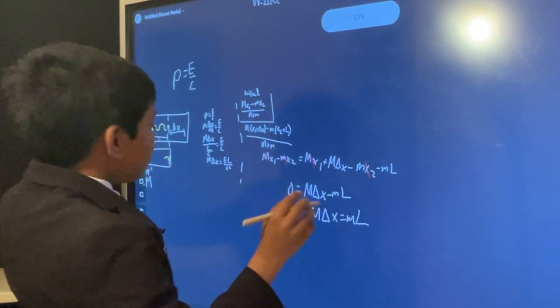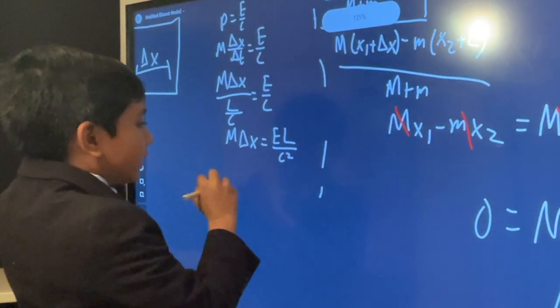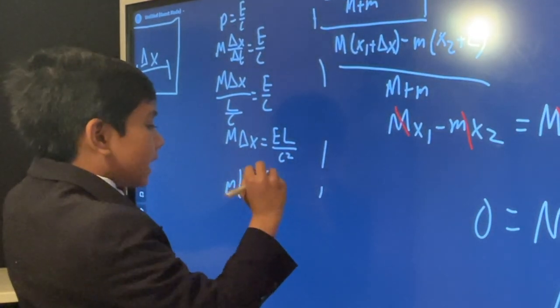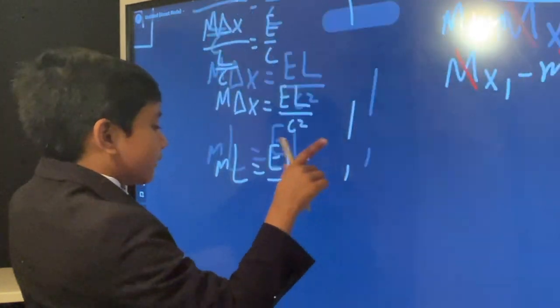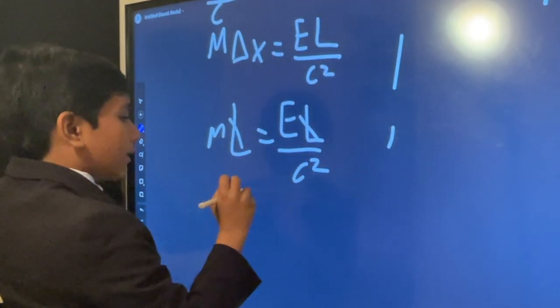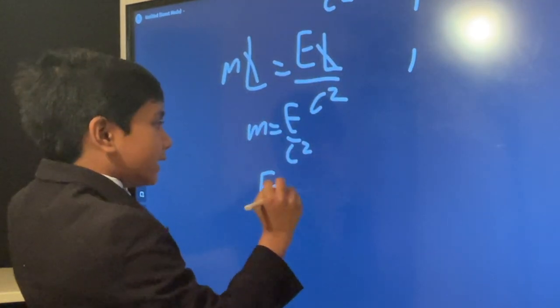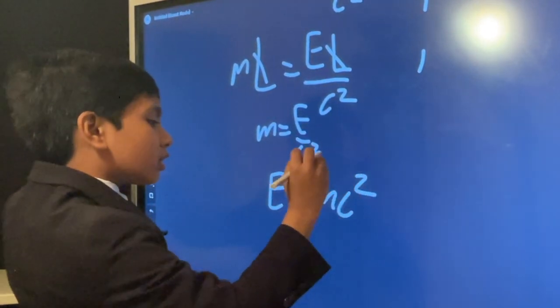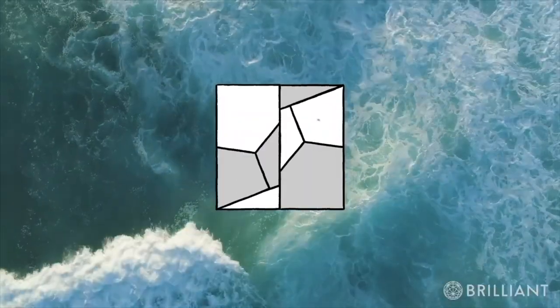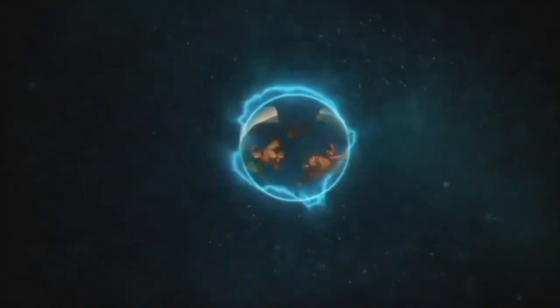And so now that means we can plug in, and we get M L equals E L over C squared. We cancel out on both sides. Boom, boom. We get M equals E over C squared. After some rearranging, we get E equals M C squared. Woo! Brought to you by Brilliant.org. Bari Science Lab to fall in love with math and science.